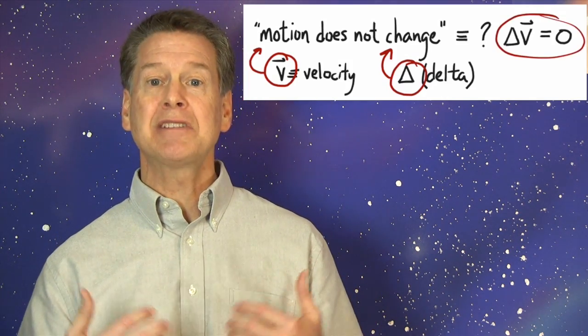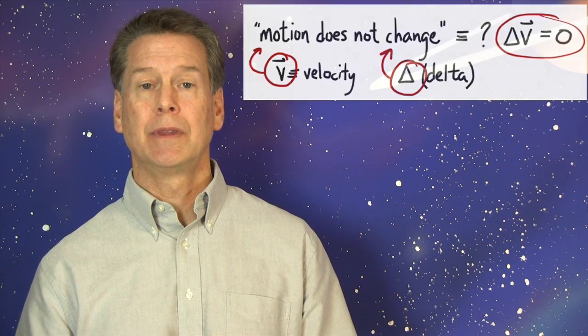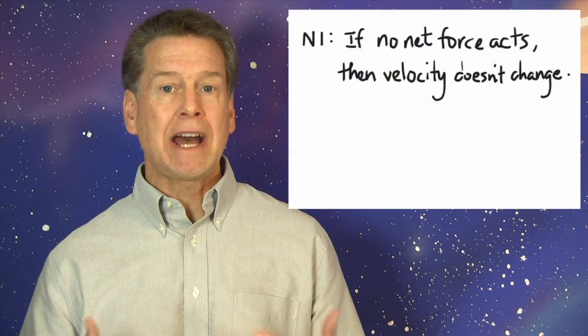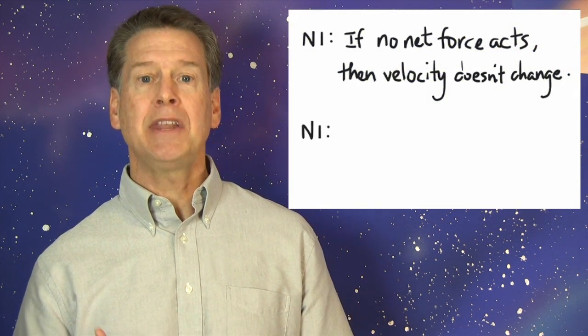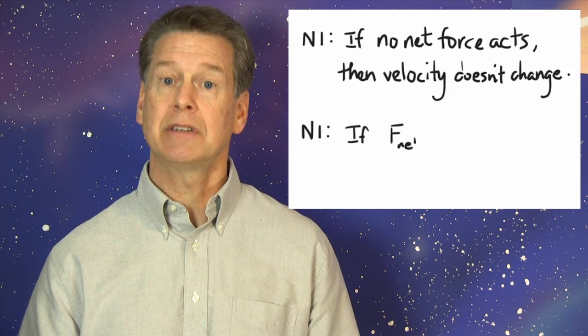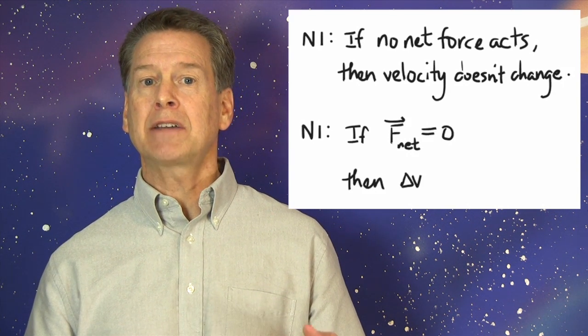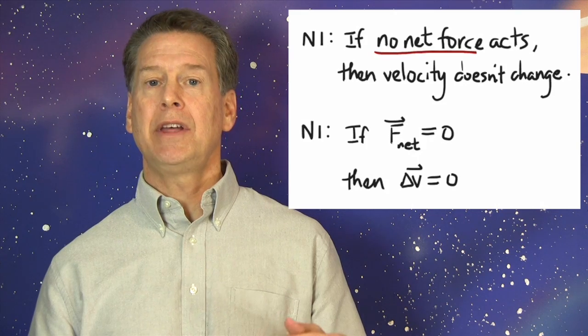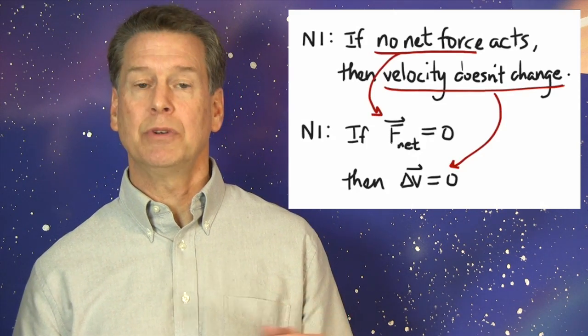Finally, we can symbolize Newton's first law of motion. If no net force acts on an object, then that object's motion does not change. If F vector net equals zero, then delta V vector equals zero.